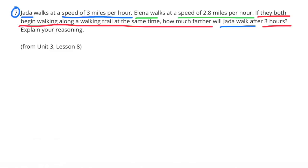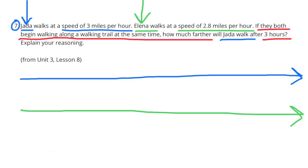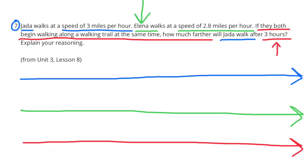Number 7. Jada walks at a speed of three miles per hour. Elena walks at a speed of two-and-eight-tenths miles per hour. If they both begin walking along a walking trail at the same time, how much farther will Jada walk after three hours? Explain your reasoning. This blue line will represent the distances that Jada walked each hour. This green line will represent the distances that Elena walked each hour. And this red line will represent each of the three hours.